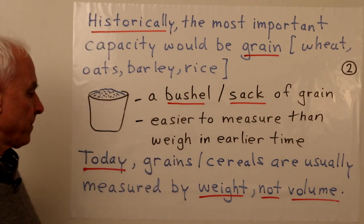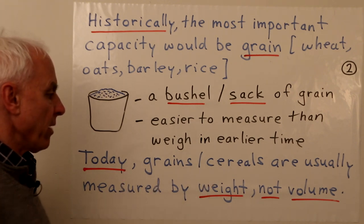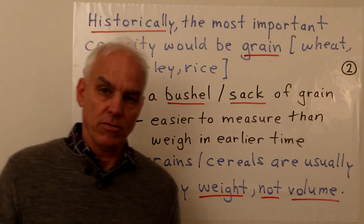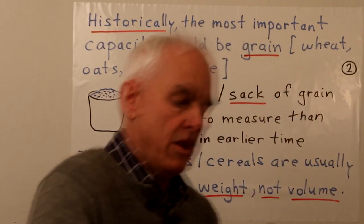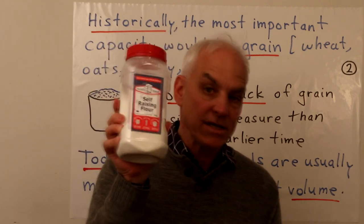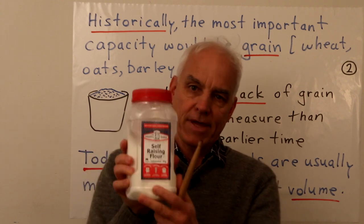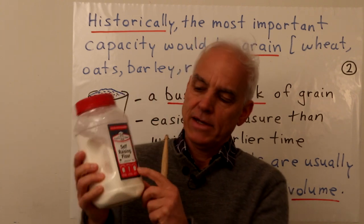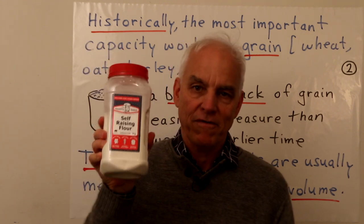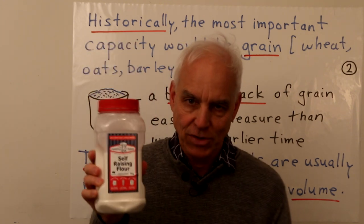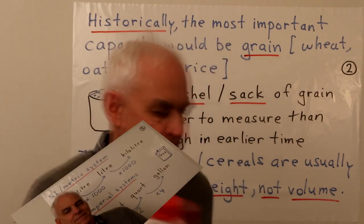Today, grains and cereals are usually measured by weight, not volume. For example, here in our kitchen we have a tub of self-raising flour — that's one kilogram of flour. That's a weight unit, not a volume or capacity unit.